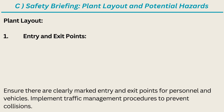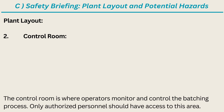Plant Layout. 1. Entry and Exit Points — ensure there are clearly marked entry and exit points for personnel and vehicles. Implement traffic management procedures to prevent collisions. 2. Control Room — the control room is where operators monitor and control the batching process. Only authorized personnel should have access to this area.